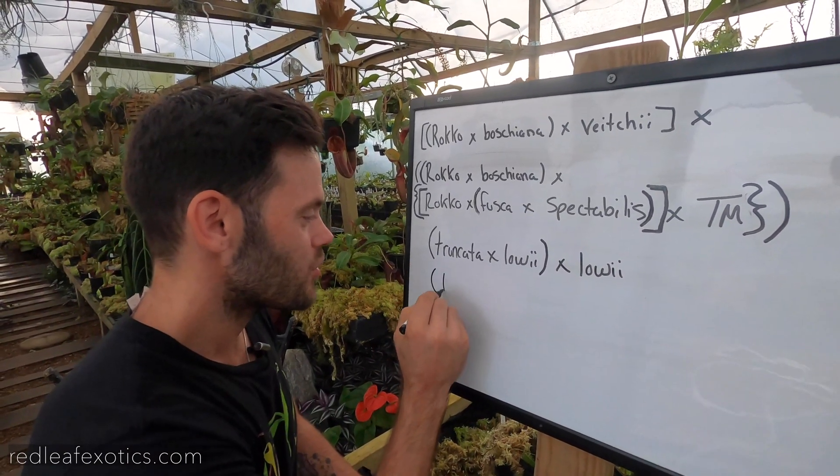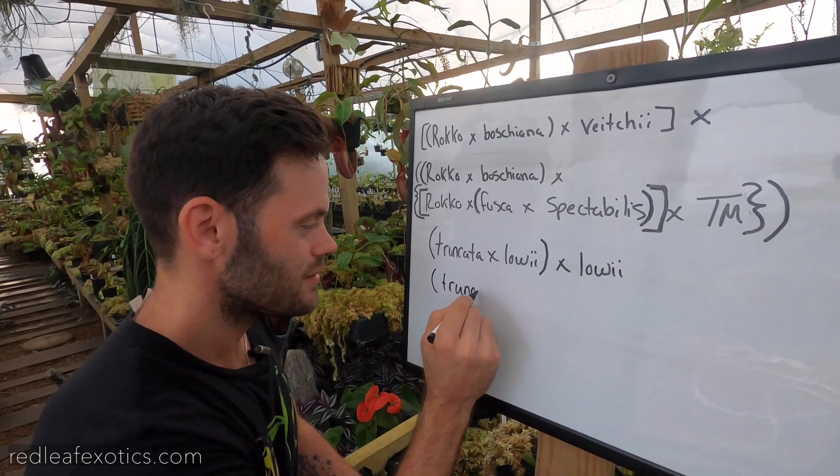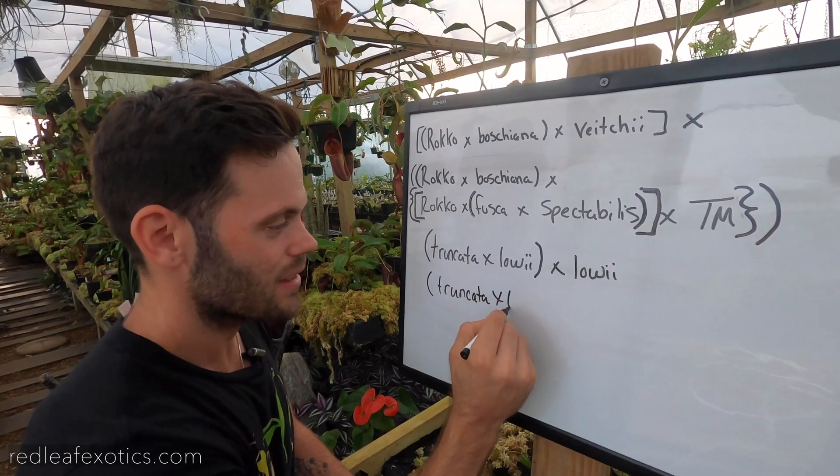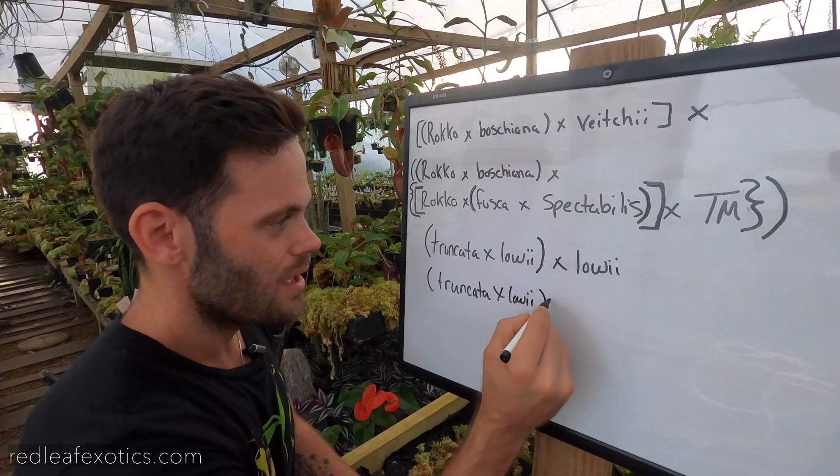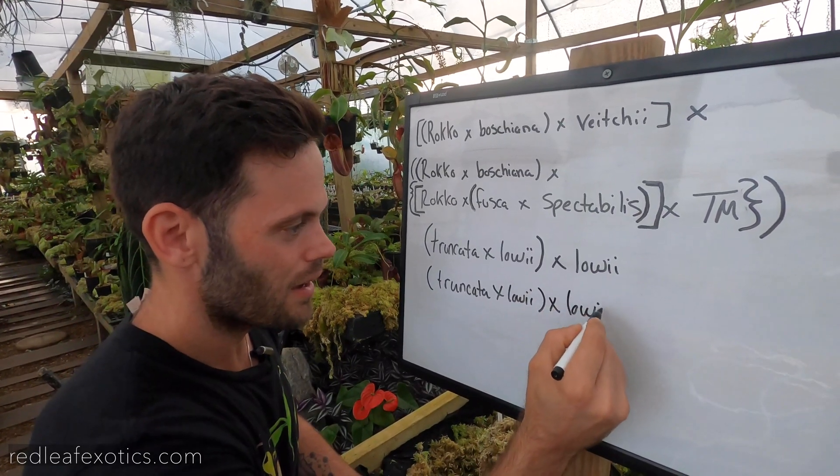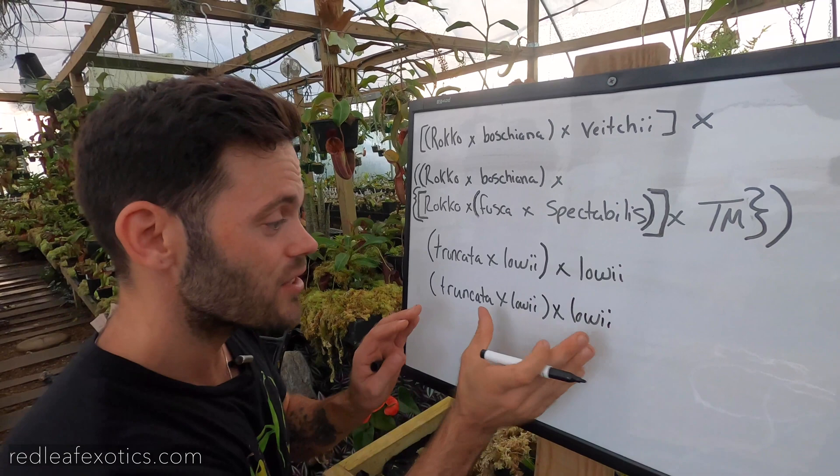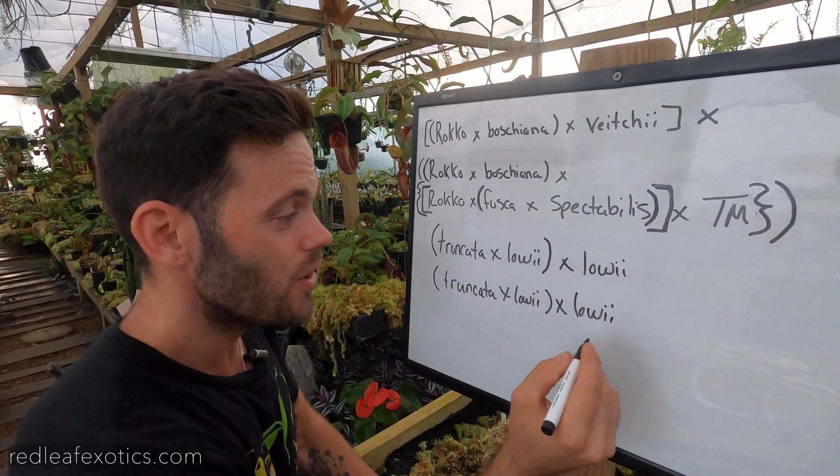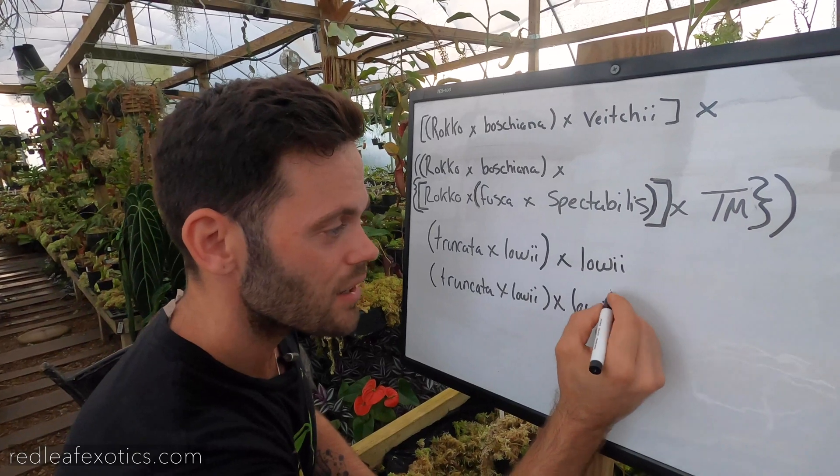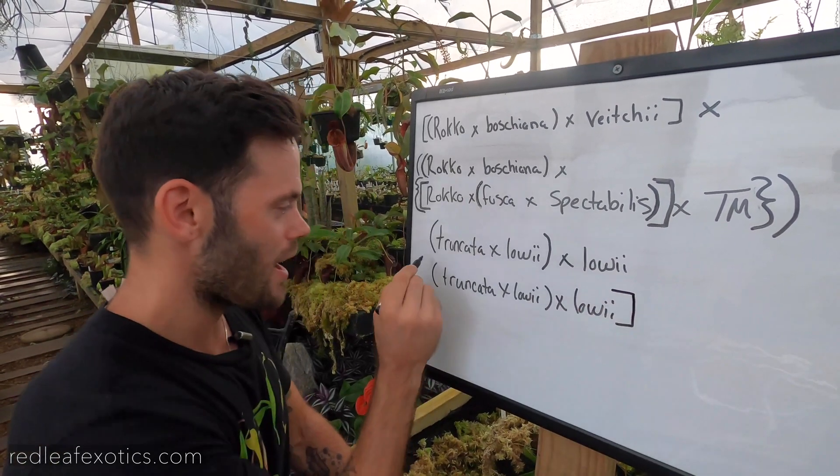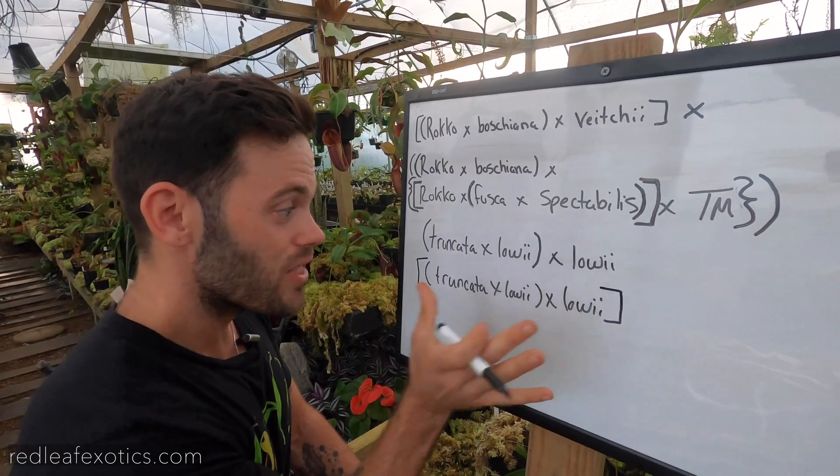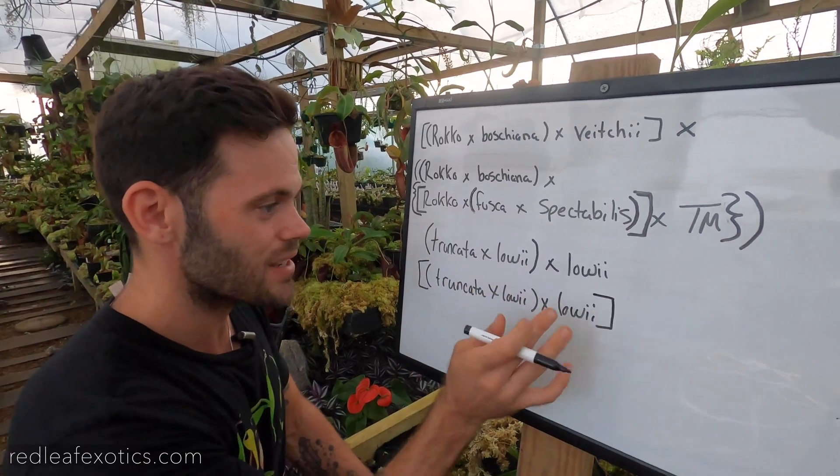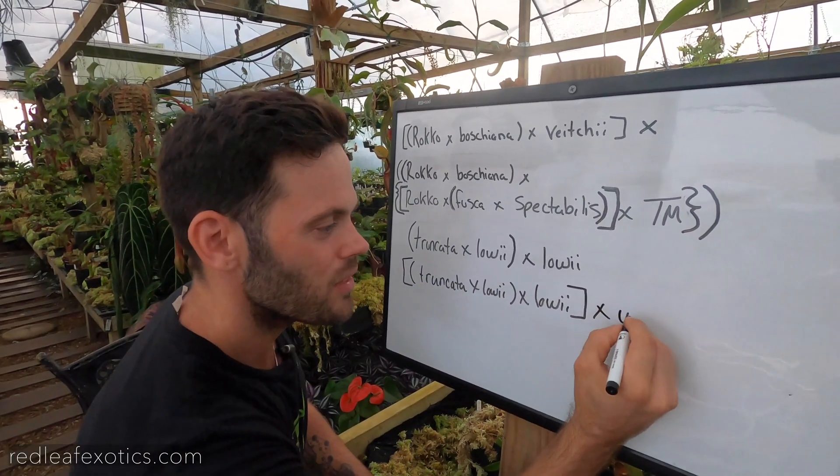So you would have Truncata X-Loeii cross Loeii. And then you're going to add it to Vichii. So I have to let growers know that this is a hybrid by itself. So then you would get into your secondary system, which is your square brackets. So this is one hybrid. That's what this is telling me. And we're going to cross it with Vichii.